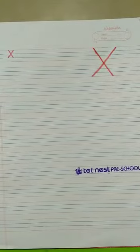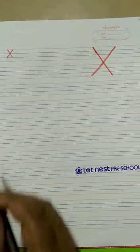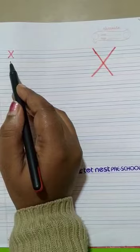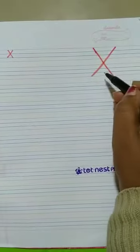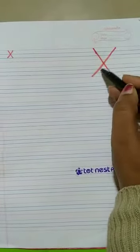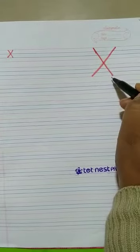Hello kids. Today we are going to write alphabet X. We use two slanting lines: left slanting line, right slanting line.